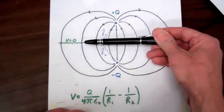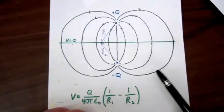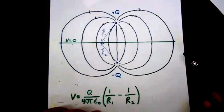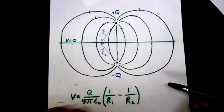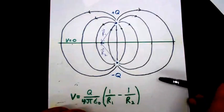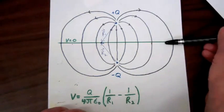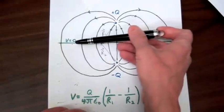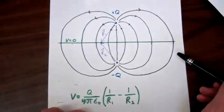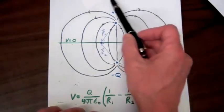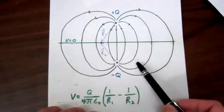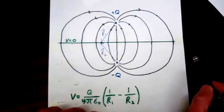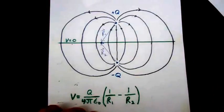Since the lengths are equal, the potential anywhere on that midplane is going to be 0. Since the potential of this plane midway between our two charges is 0, we could bring a conductor of negligible thickness — a conducting plane — and slide it into this region between the two charges, and there would be no perturbation to the electric fields or potential fields anywhere.